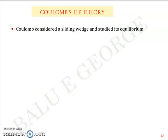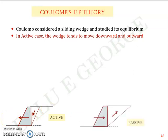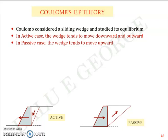In Coulomb's theory, when the case is active, the wedge tends to move downward and outward. You have the retaining wall, and you consider a wedge of soil which is about to fail. That wedge is assumed to move downward and outward for the active case, and for the passive case it is assumed to move inward and upward. So that's the difference — earlier in Rankine's theory we didn't consider the whole wedge; we limited our studies to just a soil element.